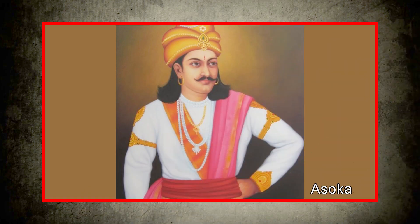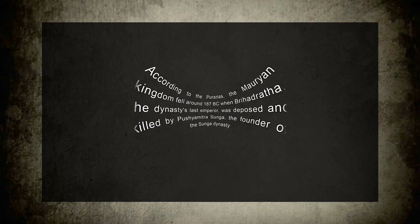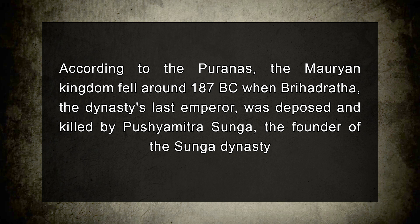It is widely assumed that Ashoka died in 232 BC, but after his death, the Mauryan emperors continued to govern for another 50 years. According to the Puranas, the Mauryan kingdom fell around 187 BC when Brihadratha, the dynasty's last emperor, was deposed and killed by Pushyamitra Shunga, the founder of the Shunga dynasty. In other words, less than 50 years after the death of Ashoka, the powerful Mauryan Empire collapsed.